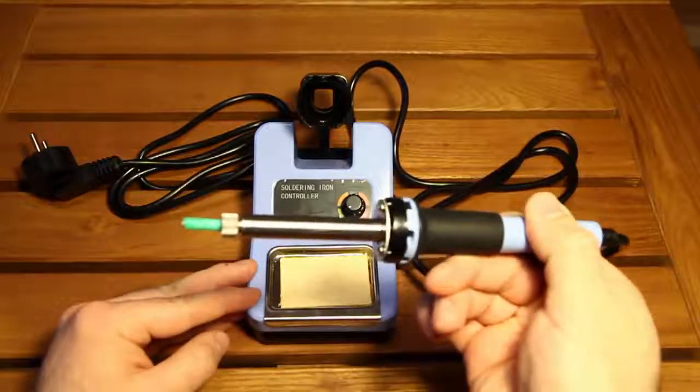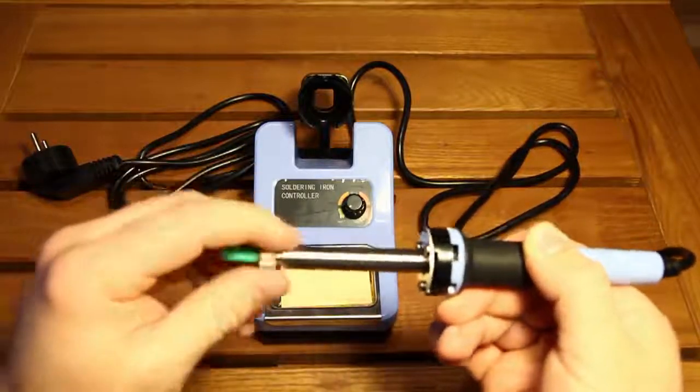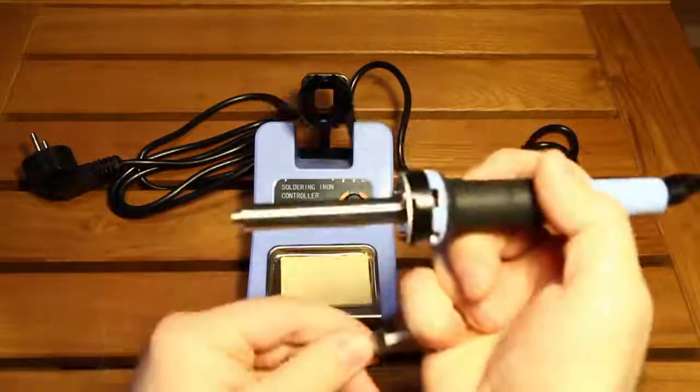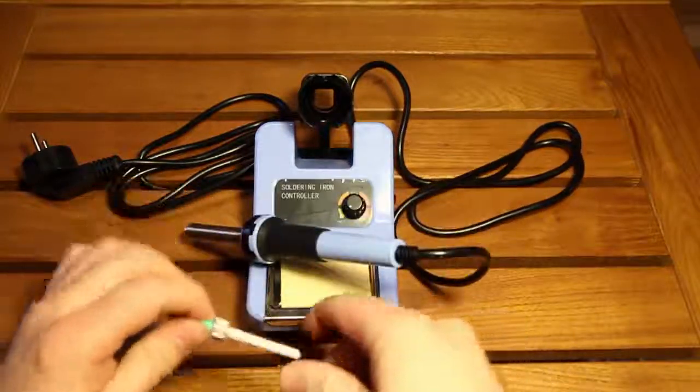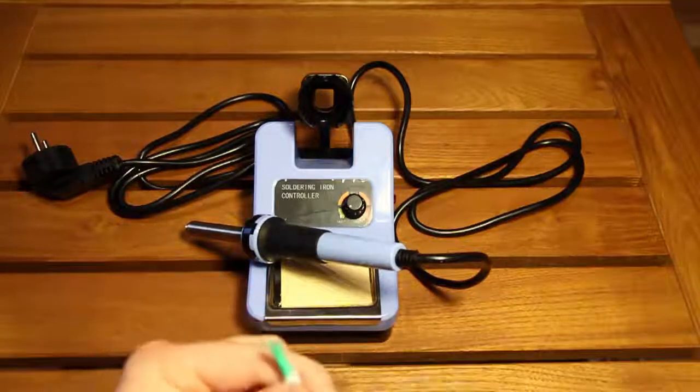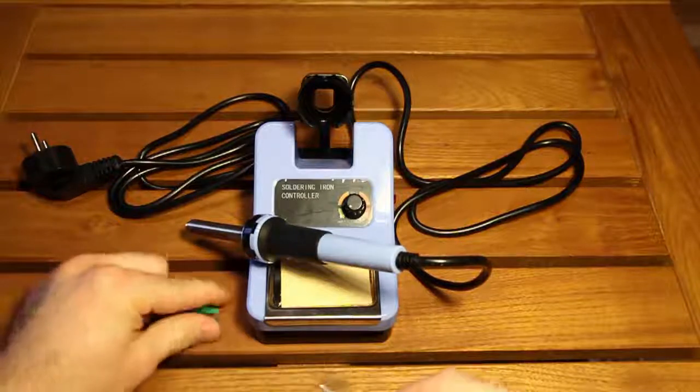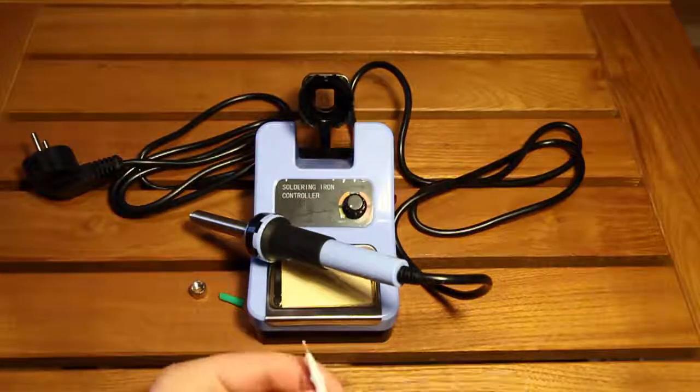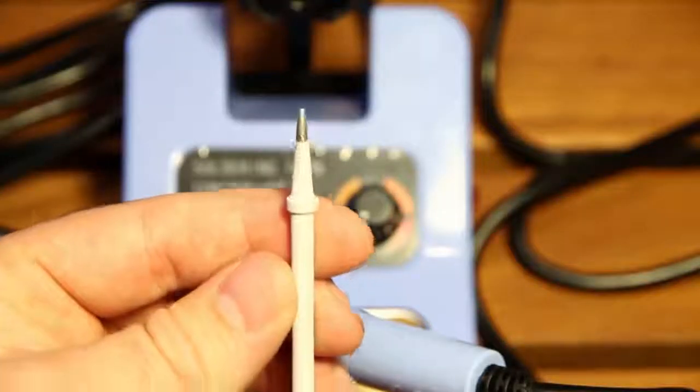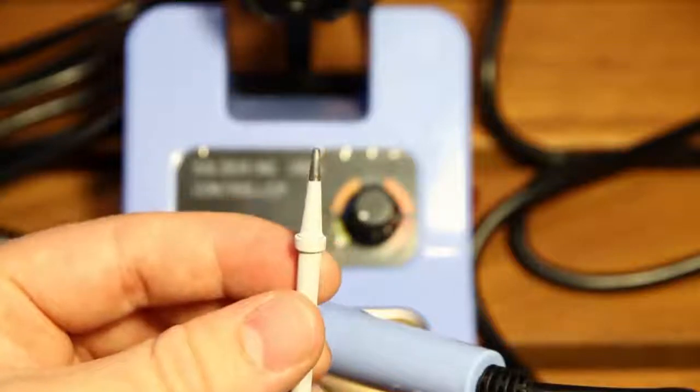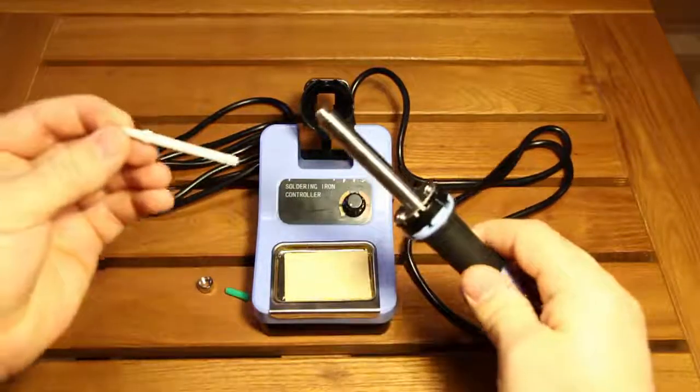This is the soldering iron. It has this protective piece. Let's take a look. This is the tip. I'm gonna zoom in on the tip a little bit to show you. That's the tip.